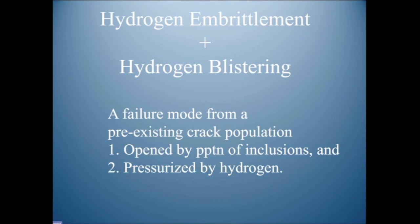When they changed the filling system and installed contact pouring — though it was only a halfway house of what I would now consider a good system — their toughnesses went up immediately. They never now get below 100 joules on Charpy testing. In fact there was quite large scatter way above 100 joules — the Charpy machine bounced and would not break the specimens anymore, so they had to upgrade.